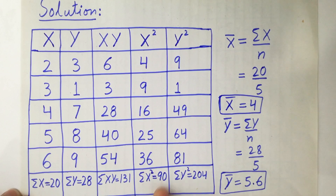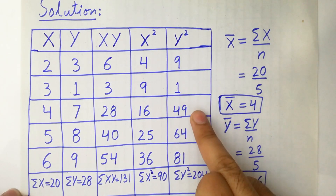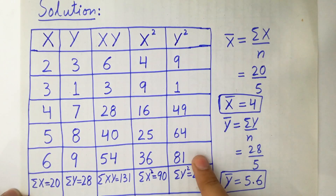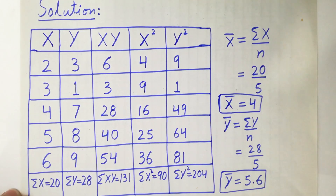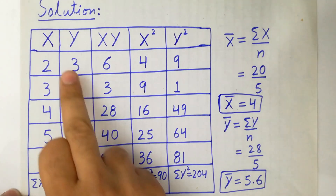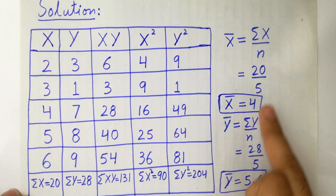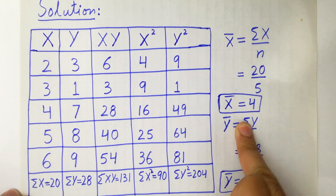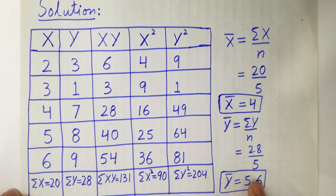Σx² = 4+9+16+25+36 = 90. Σy² = 9+1+49+64+81 = 204. Now calculate the means: x̄ = Σx/n = 20/5 = 4. And ȳ = Σy/n = 28/5 = 5.6.